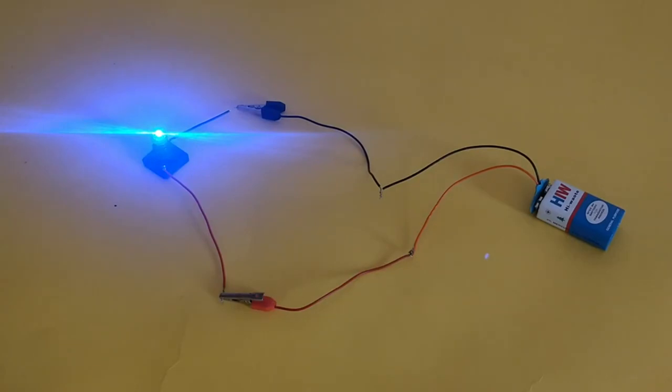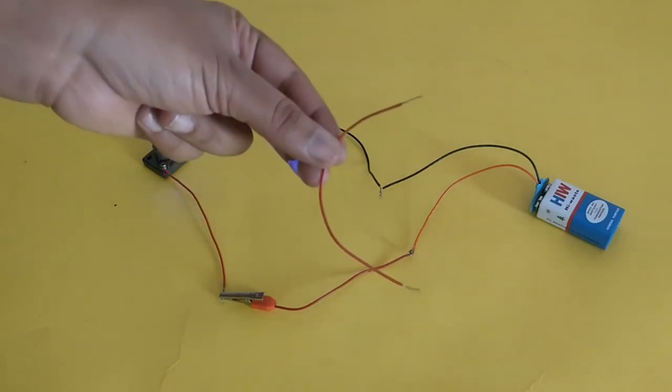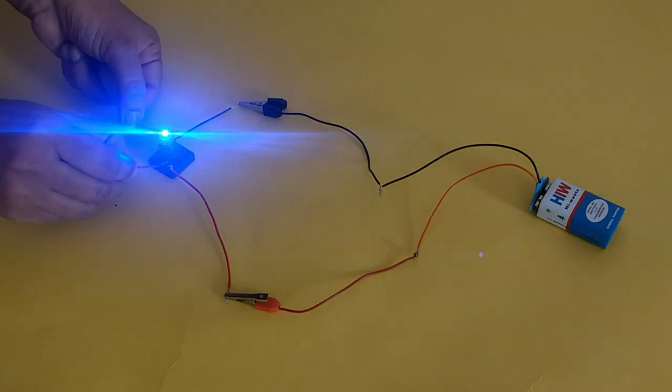Now, bulb is glowing. Now, take the wire and connect it to the ends of the bulb. This is called short circuit.